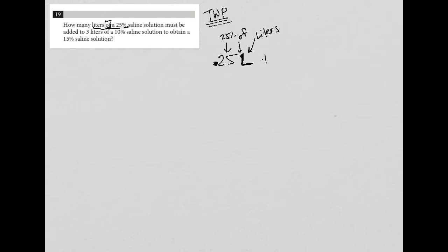How many liters—so L—of, or times, a 25%—so 0.25—saline solution must be added to three liters of a 10% solution. If I do the same method here, it'd be 0.1 for the 10%. But now I'm multiplying by three because I do know the number of liters. So that's the translation for three liters of a 10% saline solution to obtain, or equals, a 15% saline solution. Here's a trickier part as well.